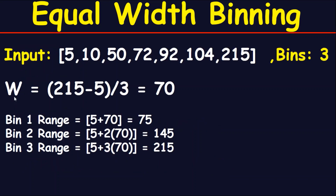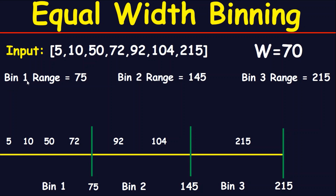W will be equal to the maximum number which is 215, minus the minimum number which is 5, divided by the number of bins which is 3, giving you 70. Bin 1 range equals the minimum 5 plus w which is 70, giving 75. Bin 2 equals 5 plus 2 multiplied by 70, giving 145. Bin 3 equals 5 plus 3 multiplied by 70, giving 215.